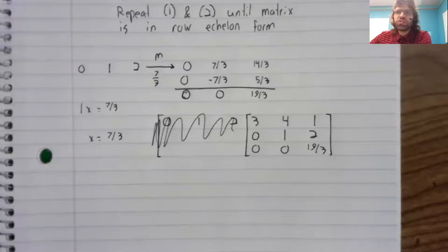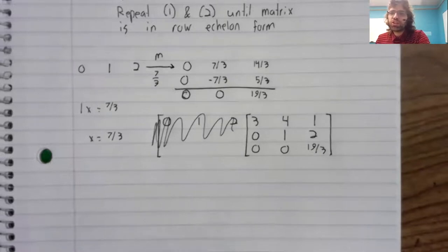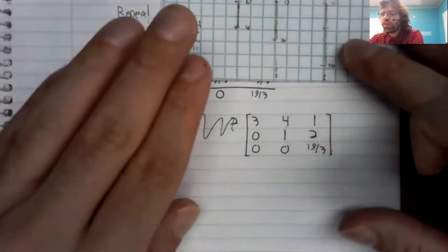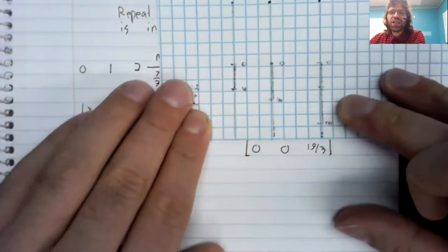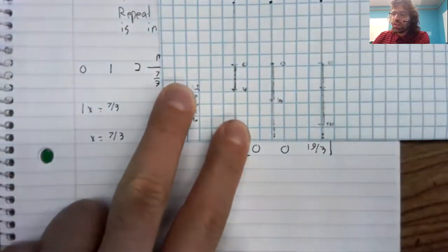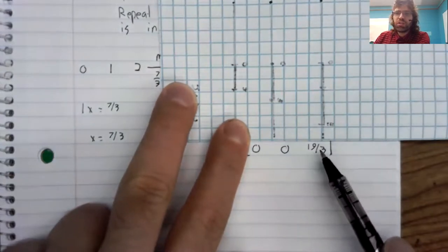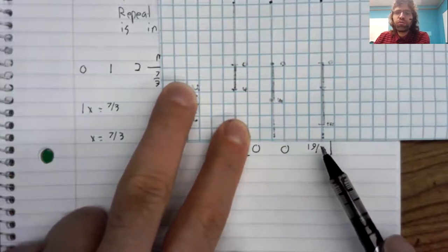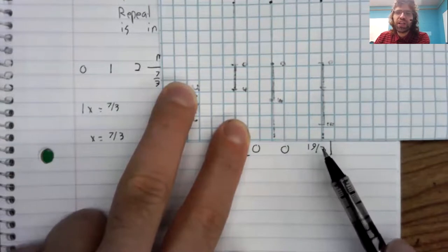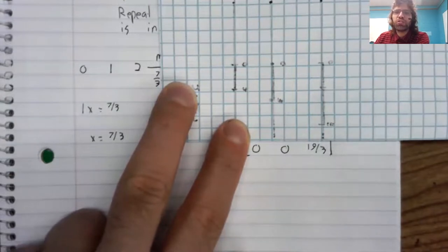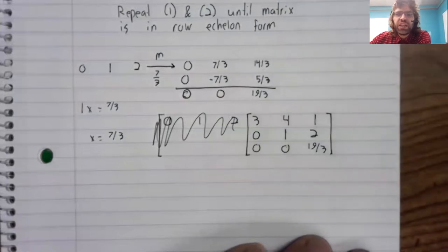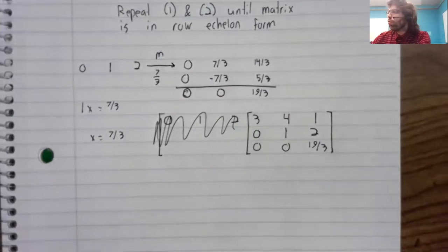And now we would just keep repeating this process, except as it happens, we're done. We turned everything below this one to zero. So we're finished with the first and the second row. The leftmost non-zero entry is this, but we can't perform step two. There is nothing below this 19 thirds to turn to zero. And this matrix is in row echelon form.